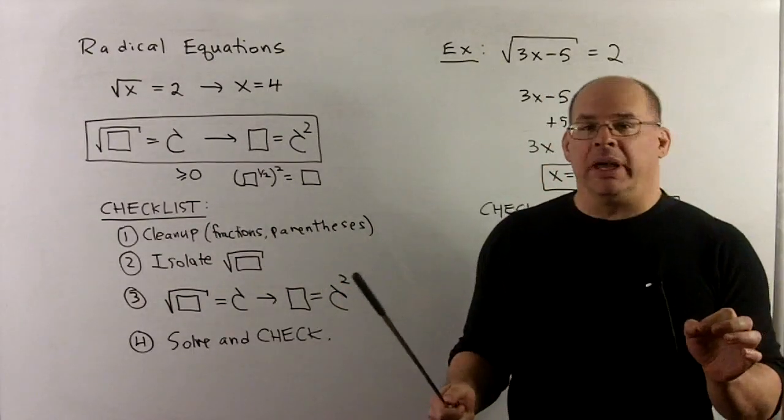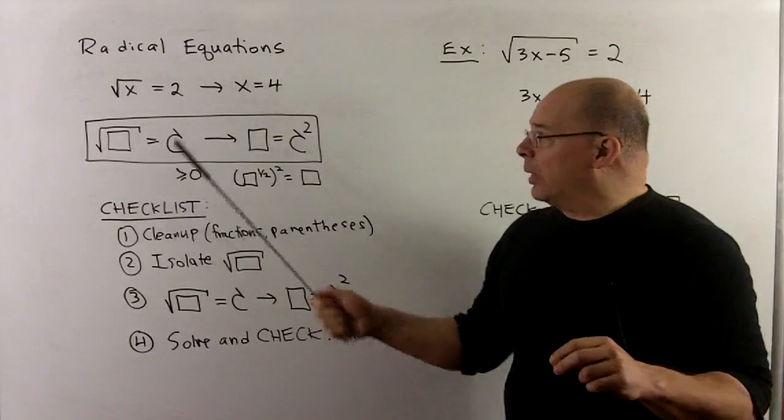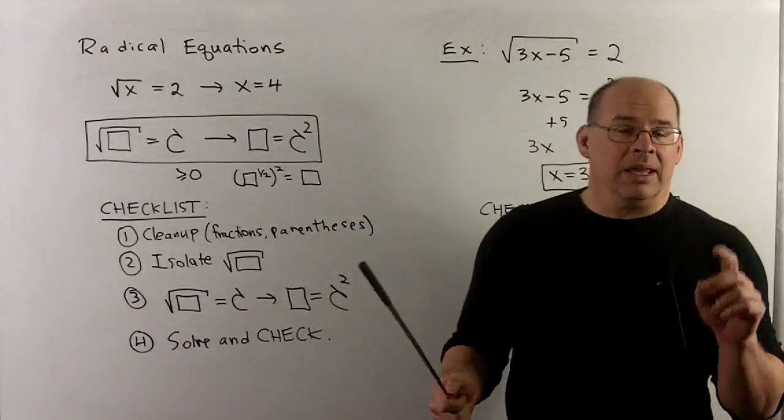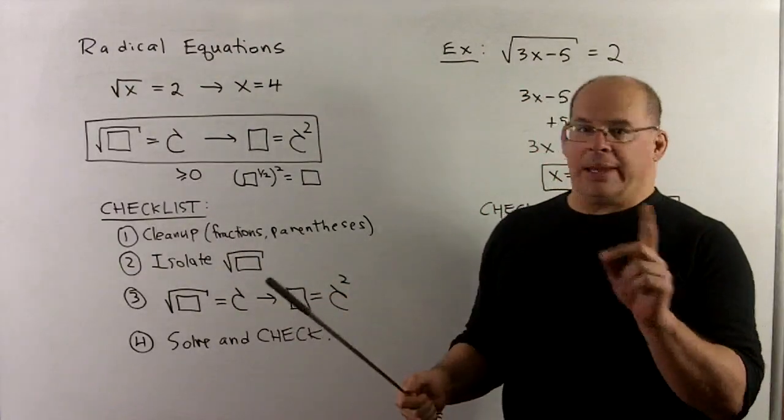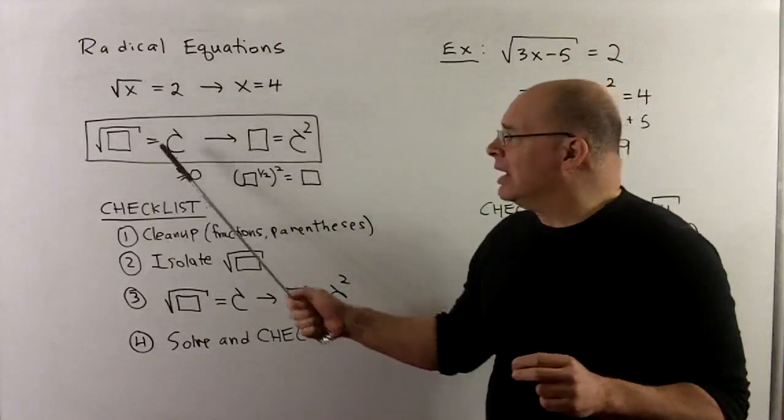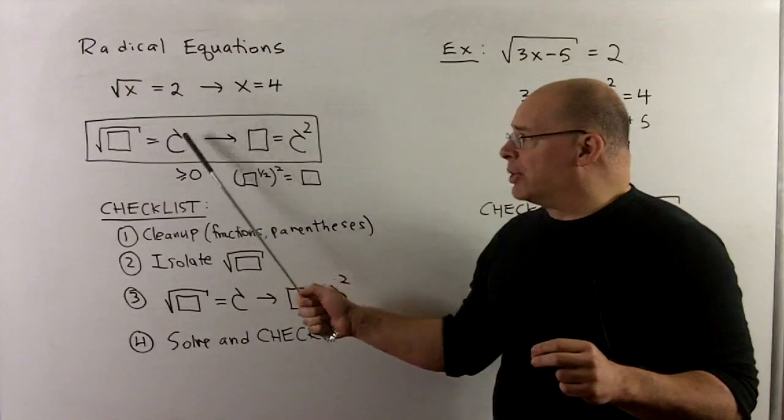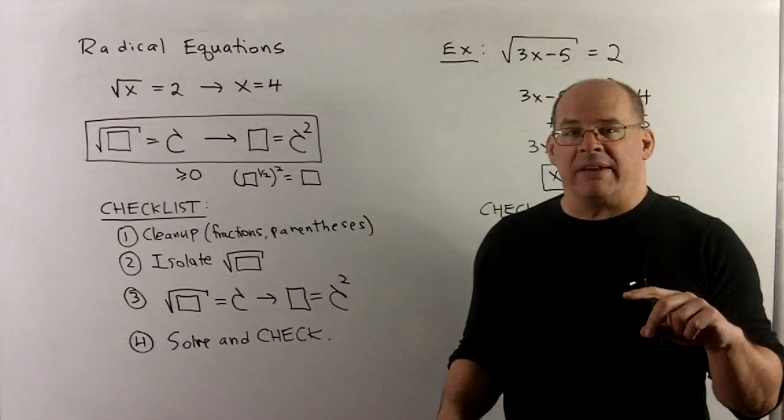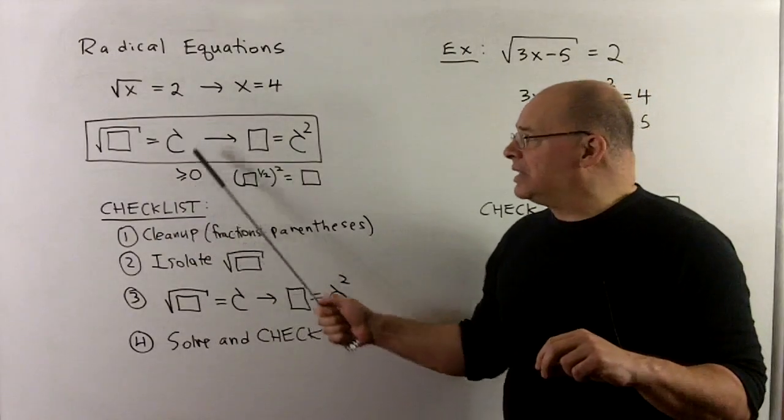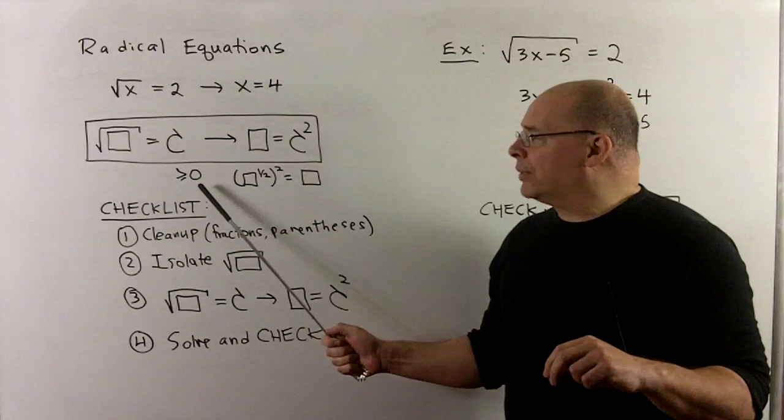This is going to be the template for what we use when we solve equations with radicals. The idea, if I have square root of a box, box can be any complicated expression, this is equal to a number c. Now remember, square roots don't produce negative numbers, so I'll need c to be greater than or equal to 0 for this to be sensible.